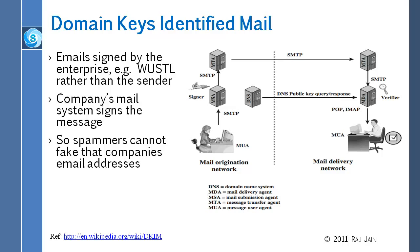Basically, based just on the domain name, many companies would reject email, and there were blacklists on the internet. If they received a lot of spam from a domain like x.com, that domain would go on the list, and every company would check the list and reject mail from it. But people pointed out that this cannot be correct, because anybody can make up any domain name, and anybody can put anything in the From address. So they said: okay, everything that a domain like Washingtonuniversity.edu sends will be signed by the domain itself. The user doesn't have to sign it — the domain signs it.